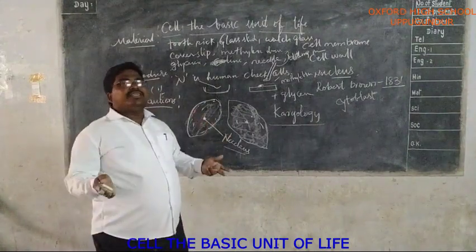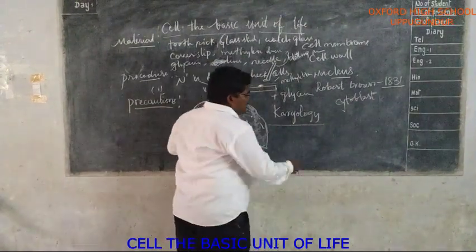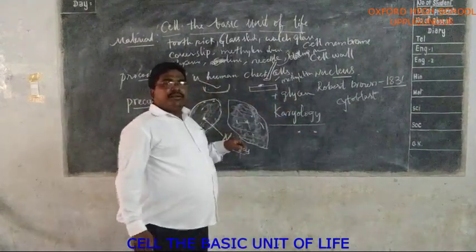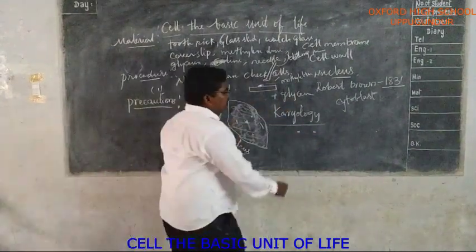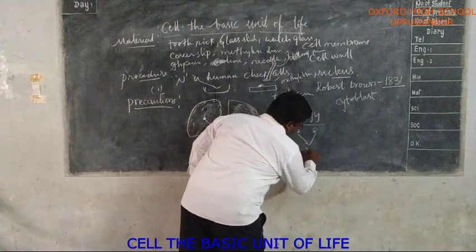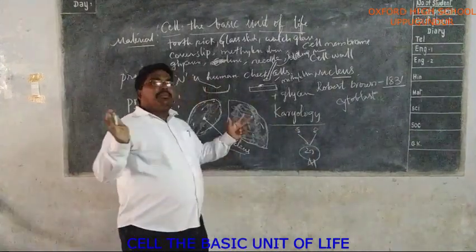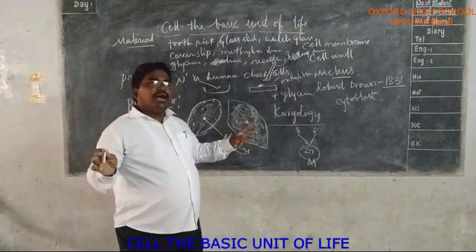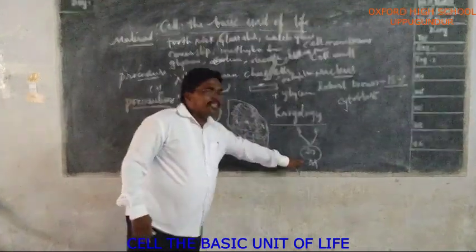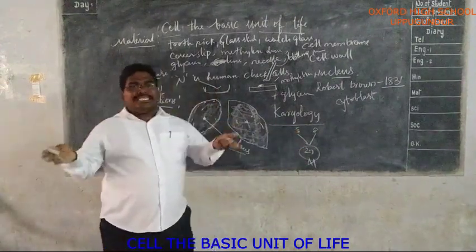Think about this: the human body contains almost 140 trillion cells, yet we are formed from just two cells — one from the mother and one from the father. From those two cells, an uncountable number of cells are formed, and the entire human body develops from them.